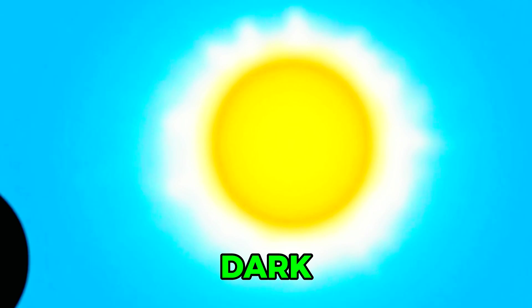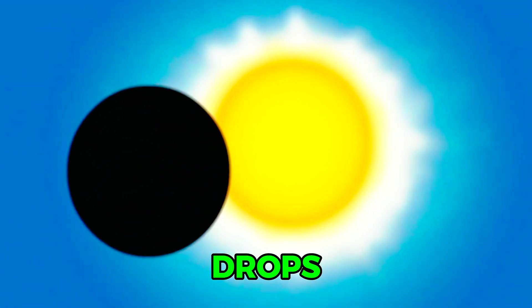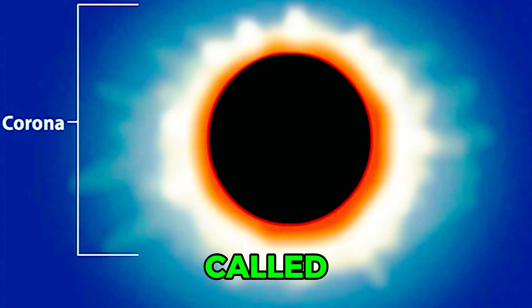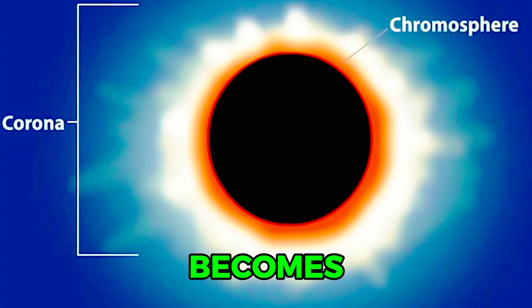The sky turns dark, and the temperature drops during the eclipse. The sun's outer atmosphere, called the corona, also becomes visible.